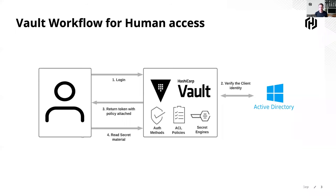This is what a workflow looks like for most logins with Vault. A user is going to request access to Vault and provide its credentials. Vault will securely pass those credentials to the identity provider, which will verify that identity — in this case, Active Directory. The result is going to be passed back to Vault, and if it's successful, Vault is going to generate a token and pass that token back to the user. That user is going to use their token for any further communication with Vault while the token is valid.